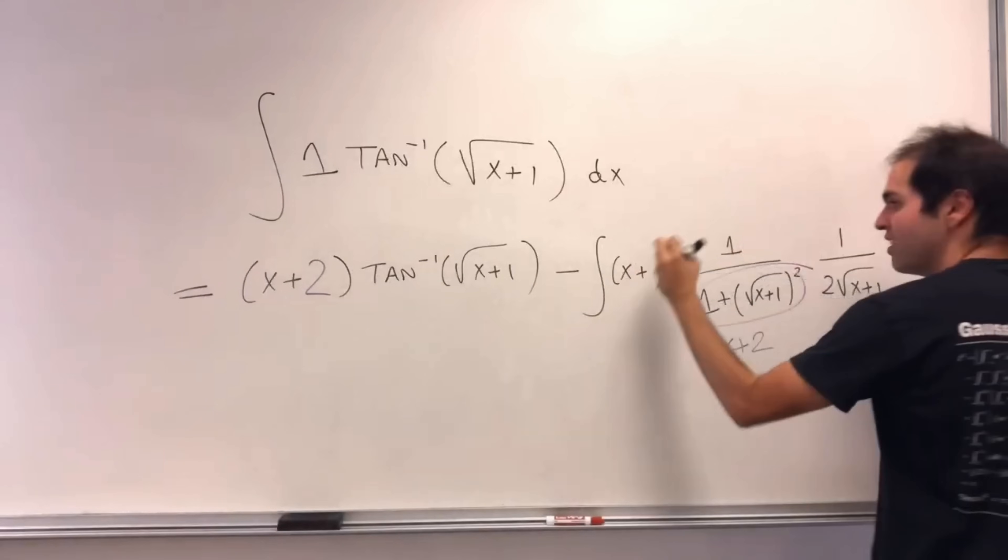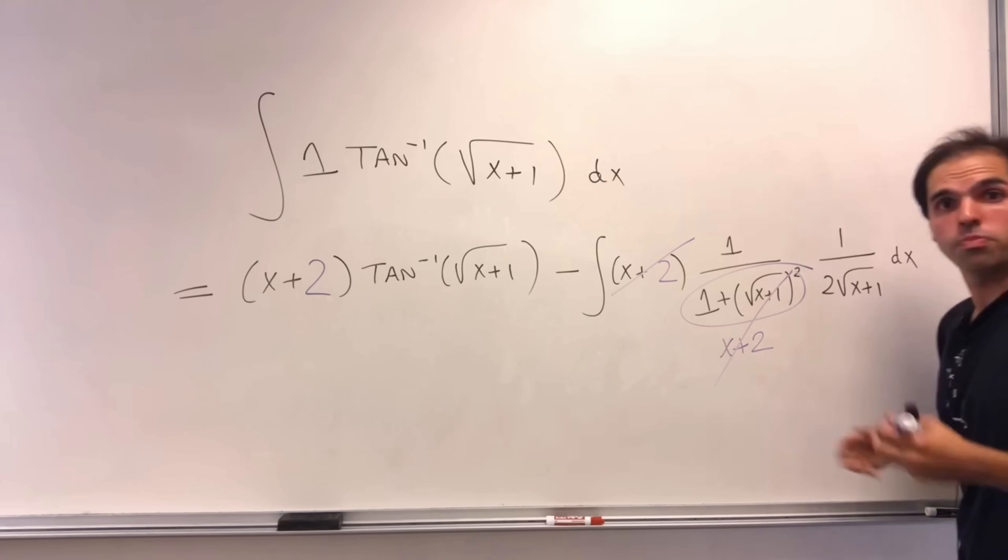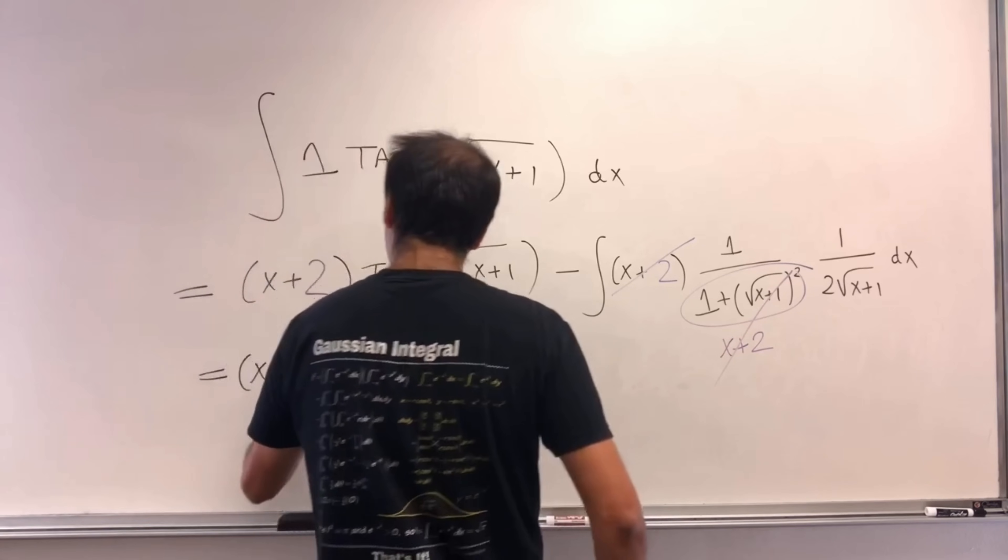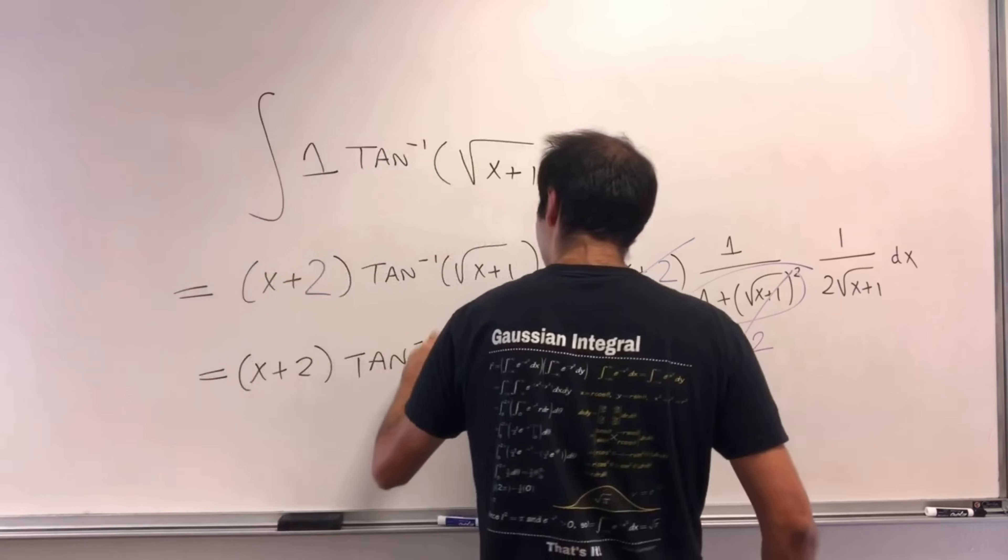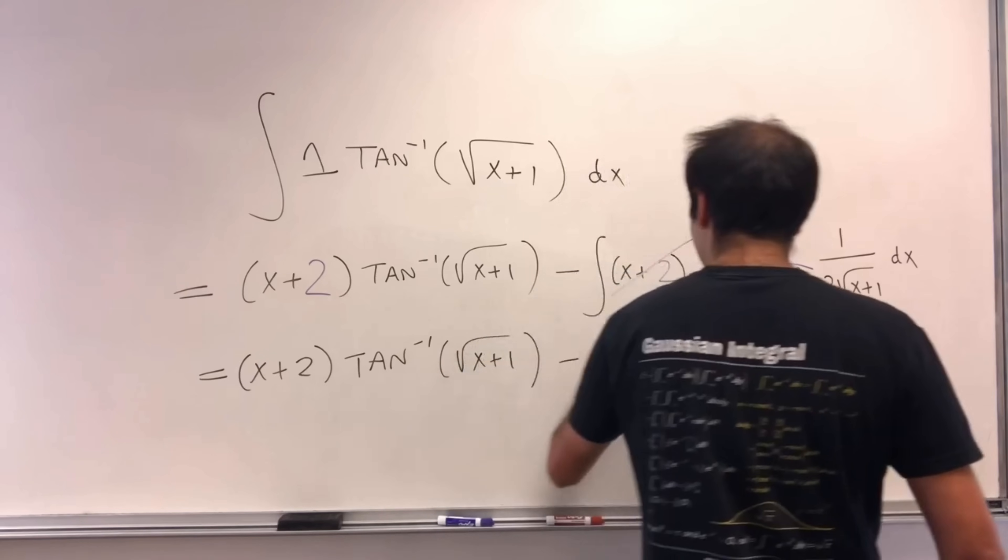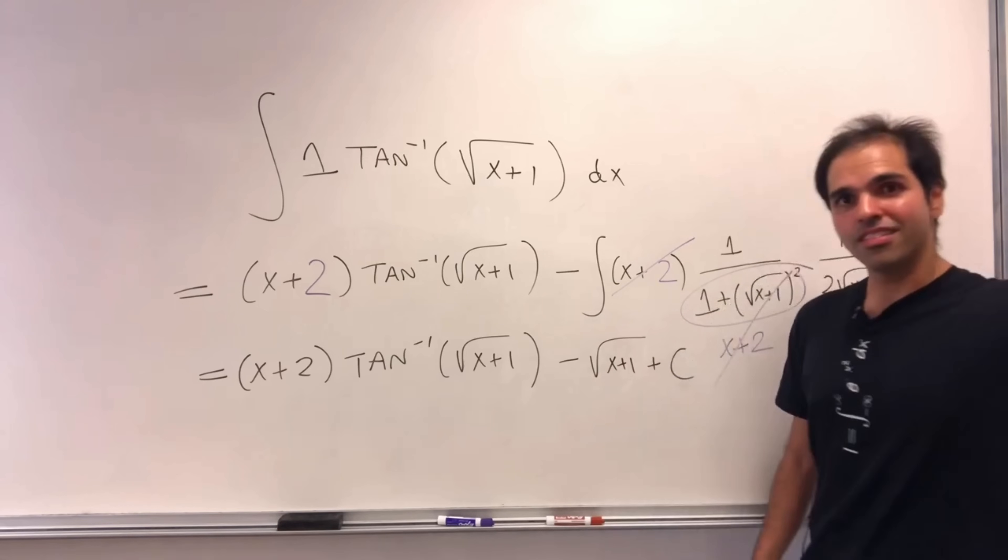Then the nice thing again, the hard terms cancel out, and you're just left with integral of 1 over 2 square root of x plus 1, which just becomes square root of x plus 1. So in the end, we get x plus 2, arctangent of square root of x plus 1, minus square root of x plus 1, plus a constant, and this is how we do it.